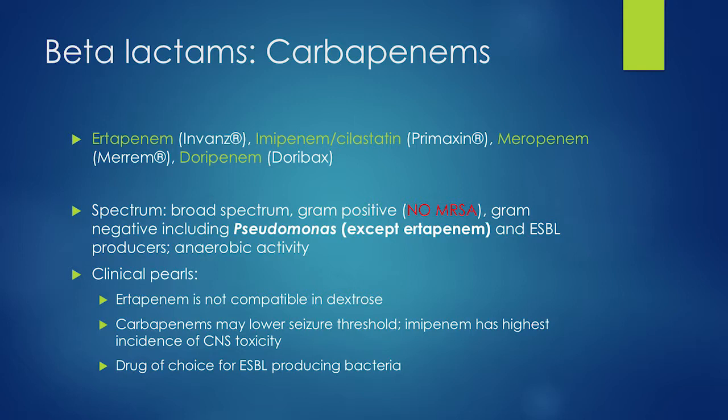We want to use this to our advantage: if someone is from the community with a life-threatening intra-abdominal infection, they probably don't have Pseudomonas. We don't need an anti-pseudomonal beta-lactam — we can use ertapenem, which treats everything gram-negative and anaerobic, just not Pseudomonas.